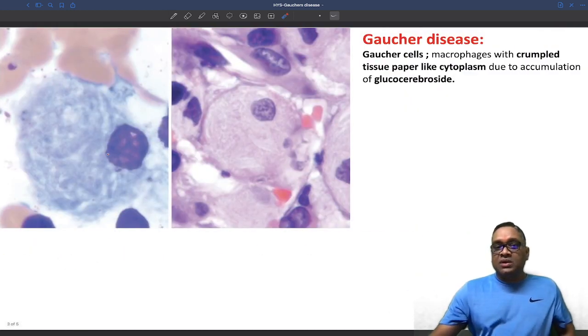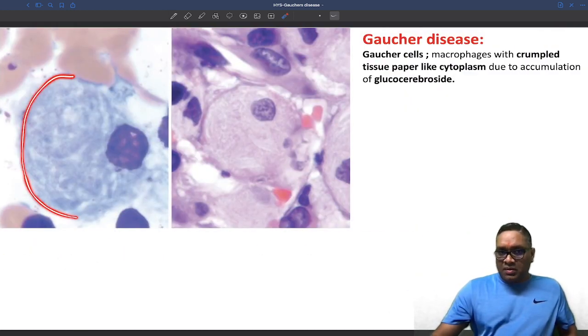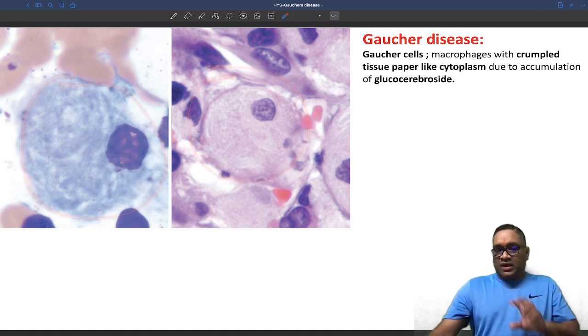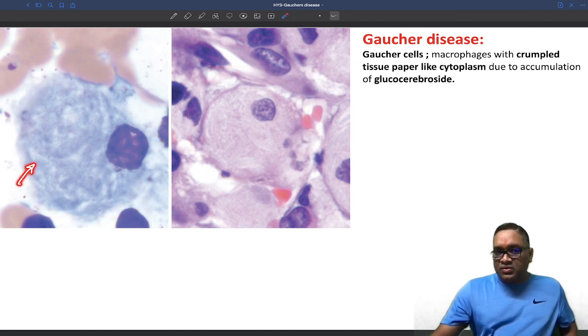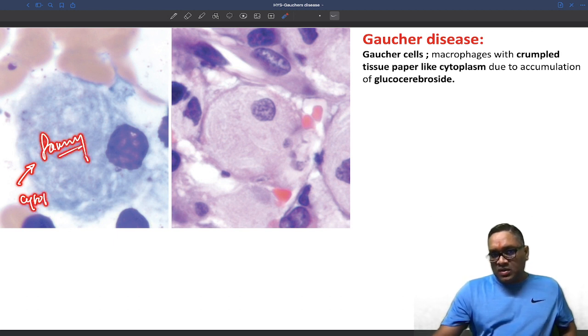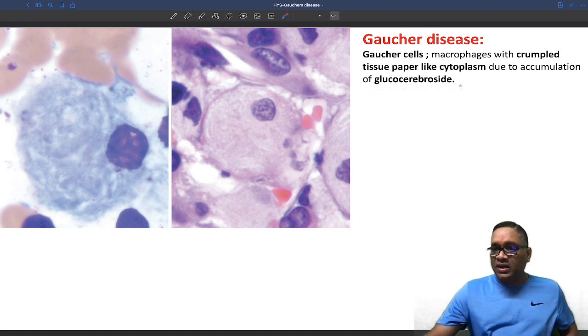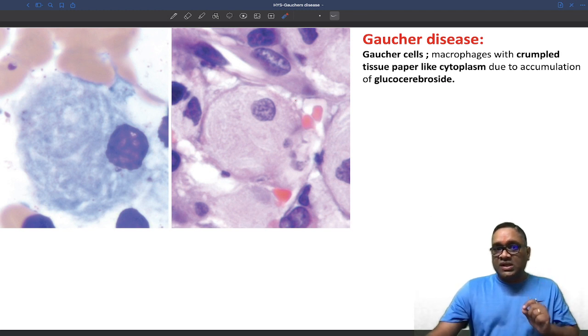On microscopic examination, you are going to see these macrophages. In these macrophages, if you look into the cytoplasm, you can see foamy cytoplasm. Why is this foamy in appearance? Because of the excessive amount of glucocerebroside accumulation. Remember, these are Gaucher cells.